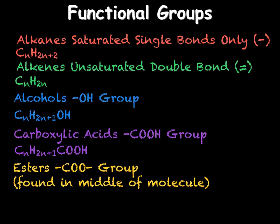This concludes today's tutorial video, C3.9, where we have looked at an introduction to organic chemistry, the homologous series we need to know for GCSE, and their functional groups. In the next video, C3.10, we will be looking at alcohols and carboxylic acids in more detail, including their production. And then finally, in C3.11, the final video in this tutorial series, we will look at esters as well as fats and soaps.